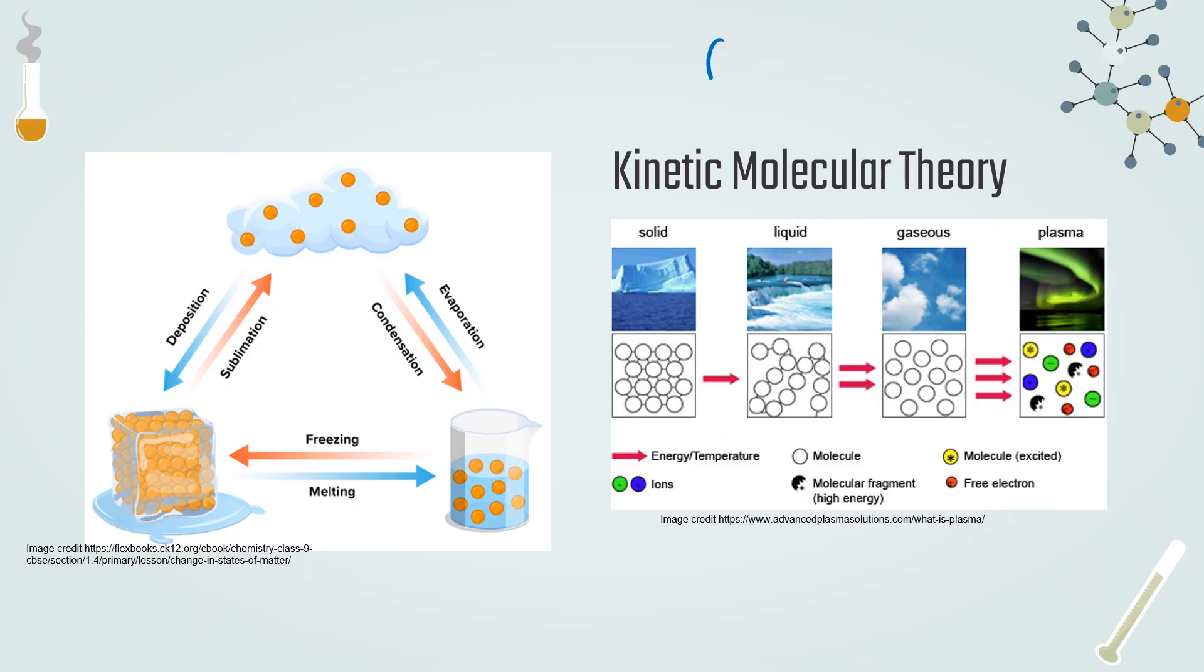I mentioned a few slides ago the state symbol aq, which stands for aqueous. It means that a substance is dissolved in water. We have other state symbols for the other states of matter. Solid, we use s. Liquid, we use l. Gaseous, we use g. Plasma, plasma we can use p, but usually plasma is not included in a chemical equation. So it's not often that we would actually need to write that p for plasma.